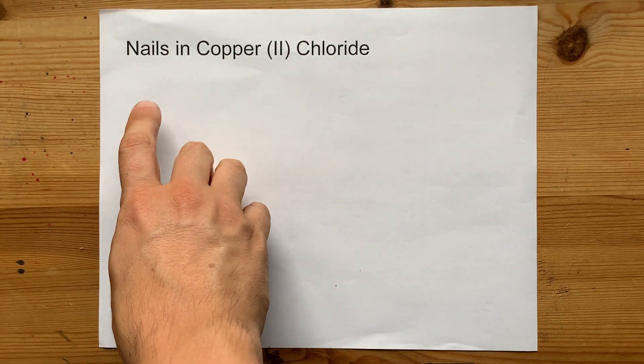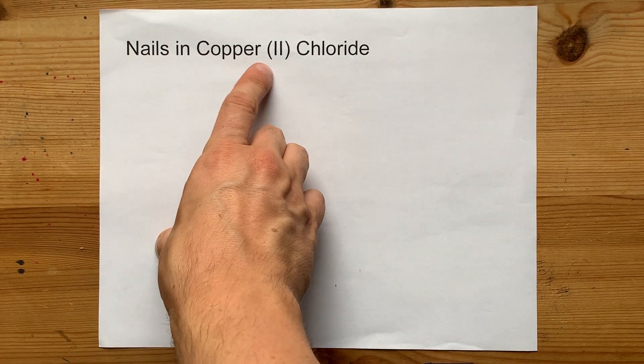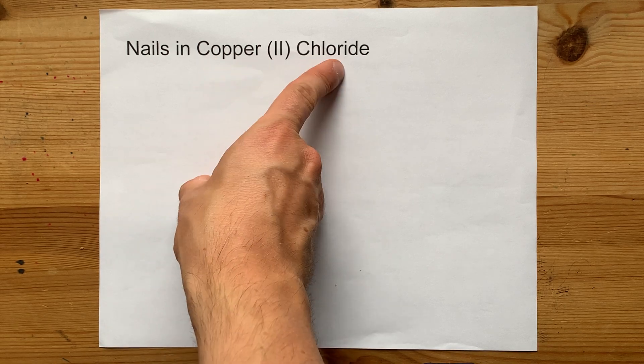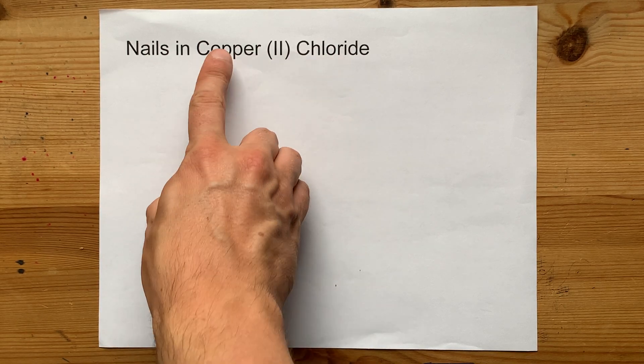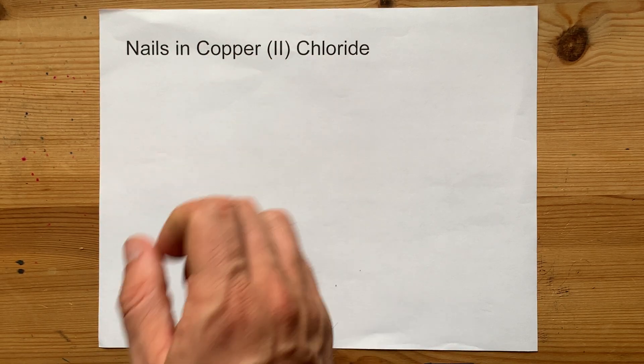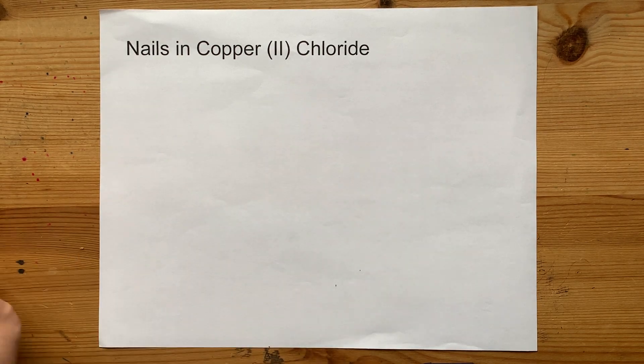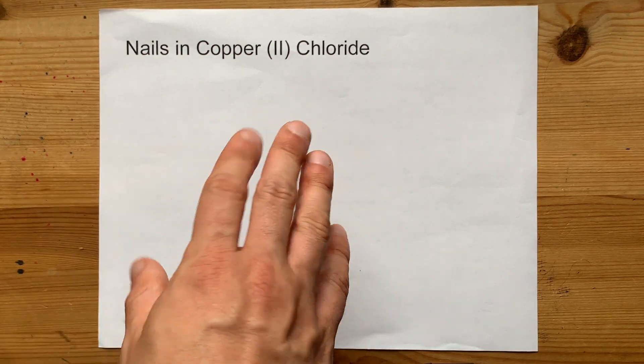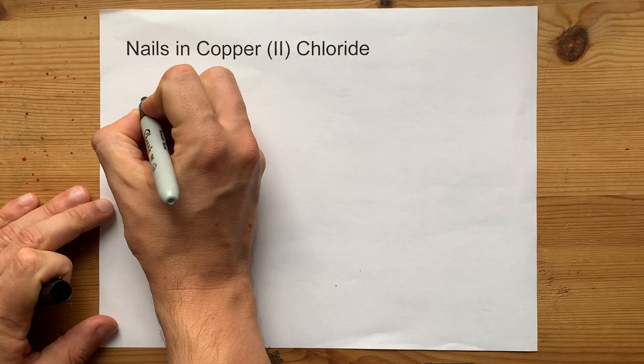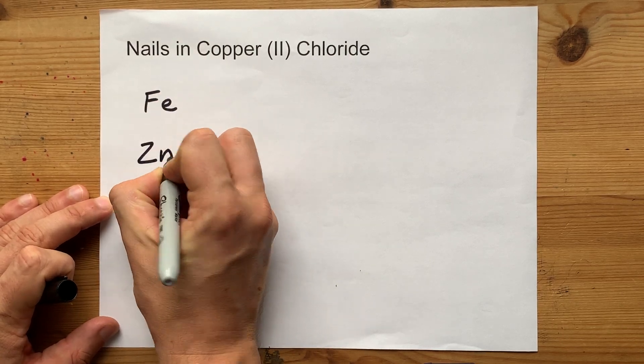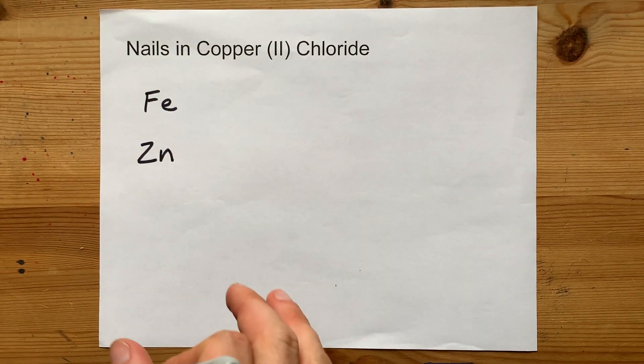The question is, what happens when you put a nail in copper-2-chloride? That's a blue solution with copper-plus-2-ions inside of it. Well, the answer is, it should technically depend if your nails are made of iron or zinc. But the actual answer is, it doesn't matter.